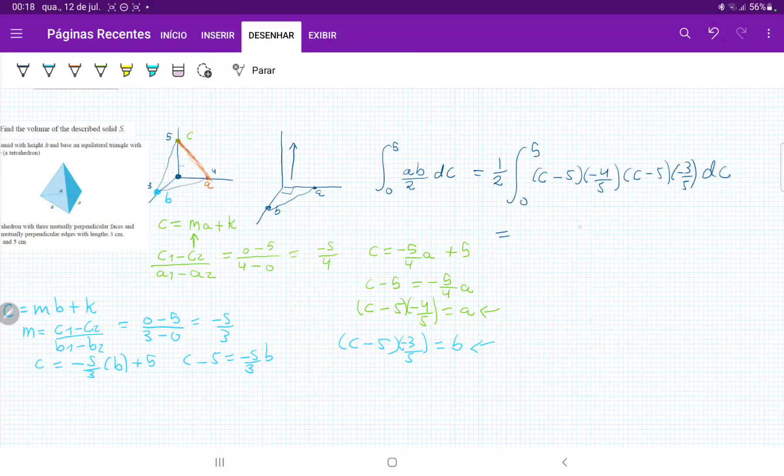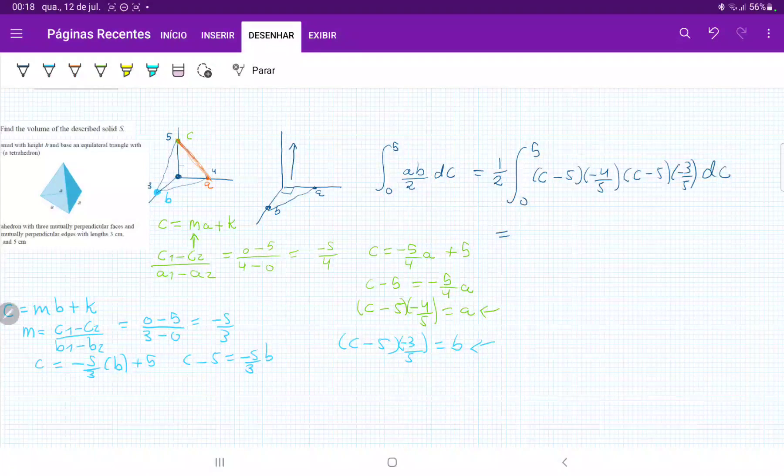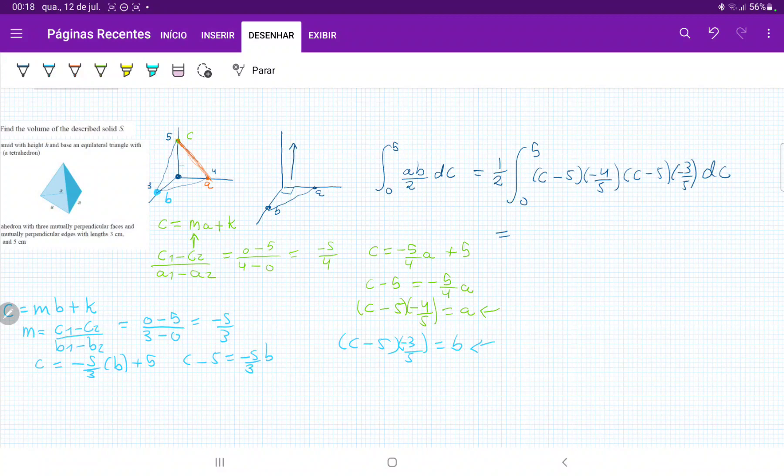Actually, before we do this, let's just clean things up a little bit. So what I'm going to do is I am going to remove the 4 fifths and the 3 fifths outside. So that is 4 over 5 times 3 divided by 5 and then divided by 2. So everything when you put outside is equal to 6 over 25, and then integral from 0 to 5, and then we're left with just C minus 5 squared. So that is C squared minus 10C plus 25, and all of this times DC.